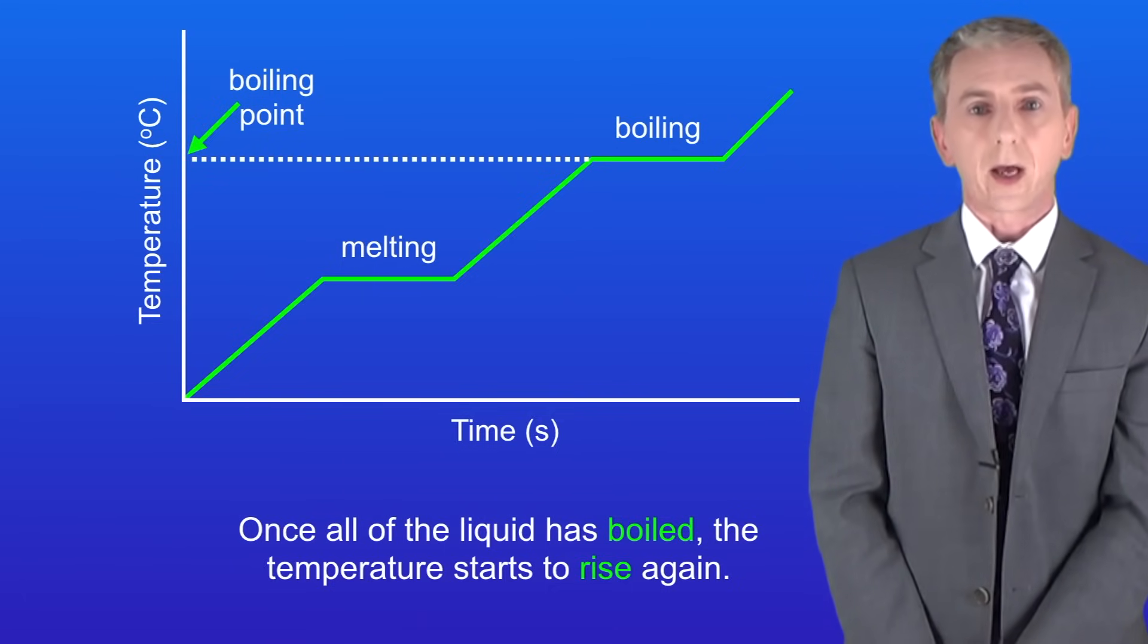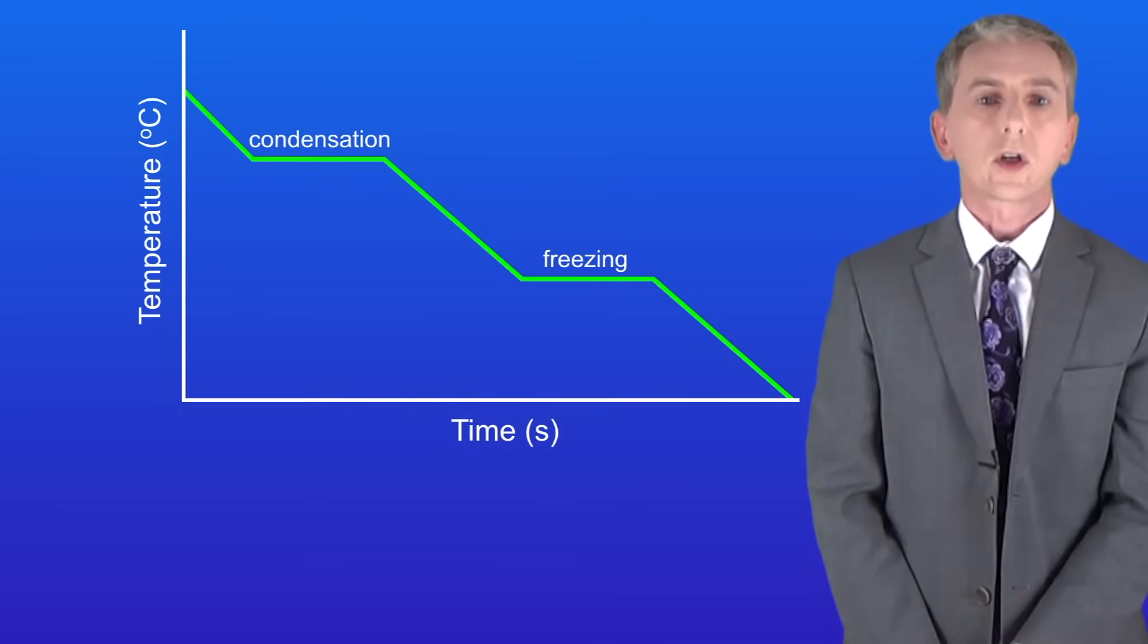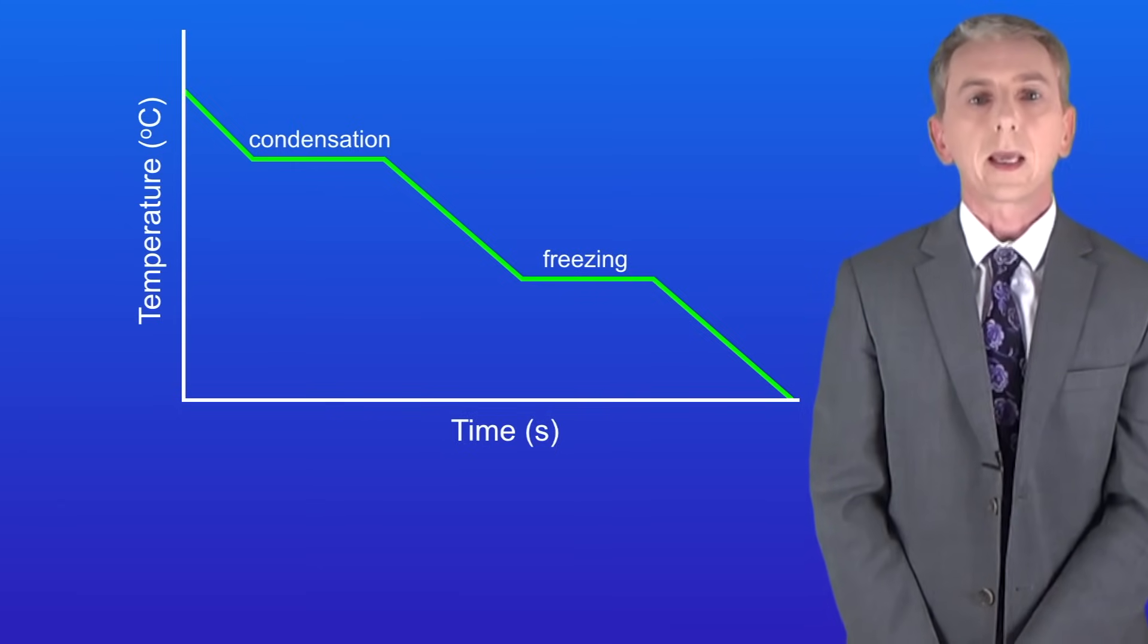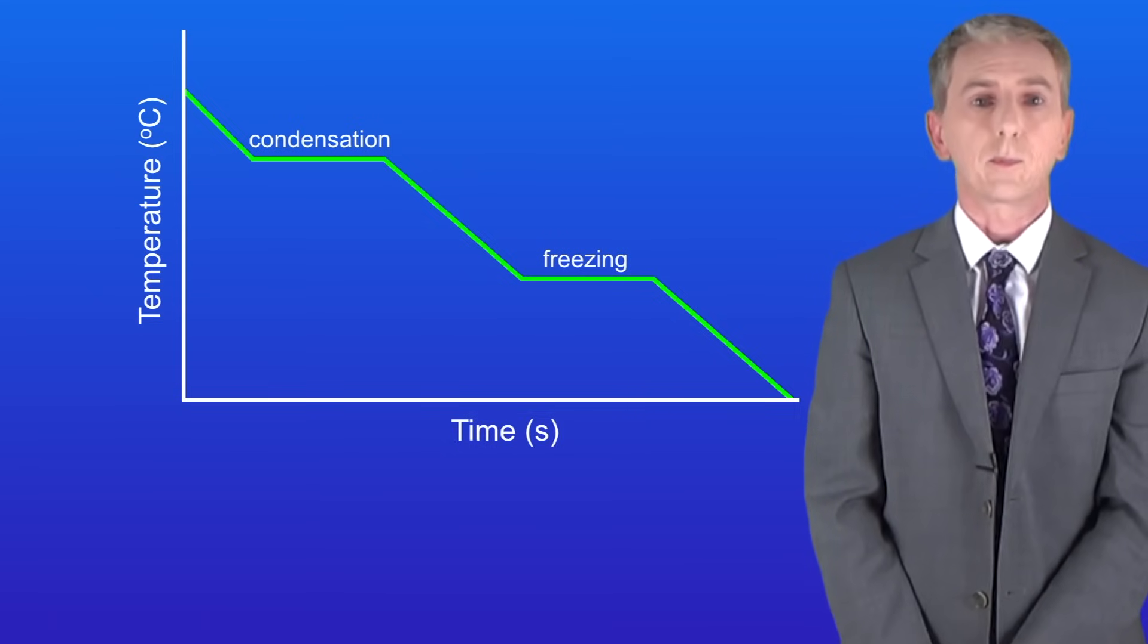Now if we take a gas and cool it down we get a graph like this one. This is called a cooling graph. Again we can see where the changes of state take place.